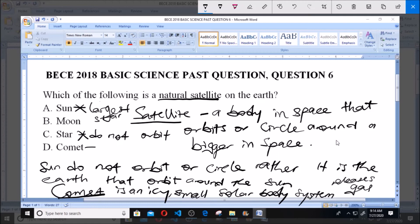Now B is moon. And like we know, moon orbits around the earth. Moon is smaller than the earth and it orbits around the earth in space.